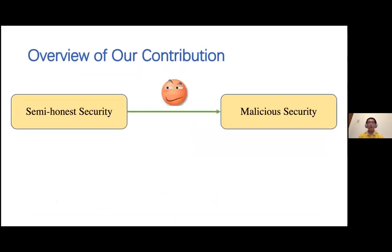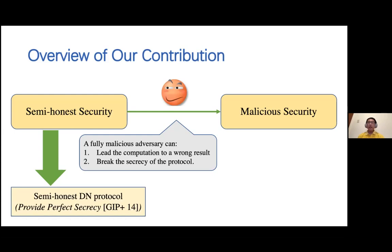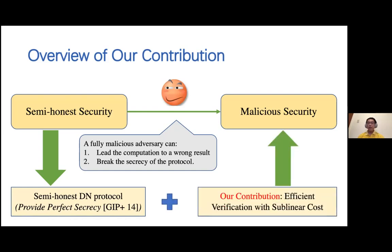Here is an overview of our contribution. At a high level, we may transform from semi-honest security to malicious security. A fully malicious adversary can not only lead the computation to a wrong result, but also break the secrecy of the underlying protocol. Interestingly, a previous work has shown that the semi-honest MPC protocol already provides perfect secrecy even if the adversary is fully malicious. Therefore, the main task becomes to check the correctness of the computation. The main contribution of our work is an efficient verification with sublinear communication complexity in the circuit size. Combining with the DN protocol, we can achieve malicious security with the same communication efficiency as the DN protocol.